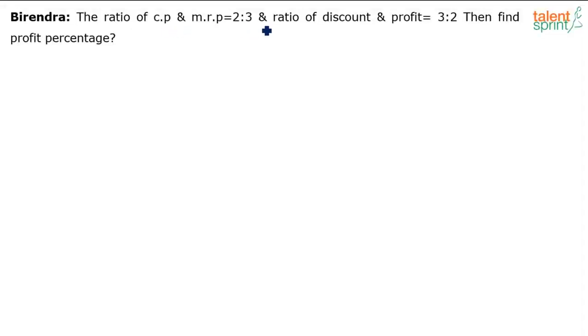The ratio of cost price and MRP is 2 is to 3, and the ratio of discount and profit is 3 is to 2. Then find the profit percentage. Let us assume that the cost price is 100. This is an assumption.